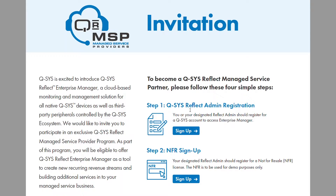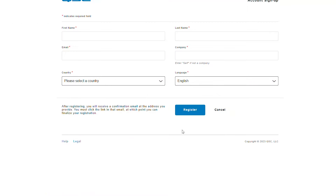Step 1. Your designated Reflect admin should register for a Q-SYS account to access Enterprise Manager, if they do not have one already. They may access the registration page by clicking on the sign-up button. Fill in all the mandatory fields and click on Register.